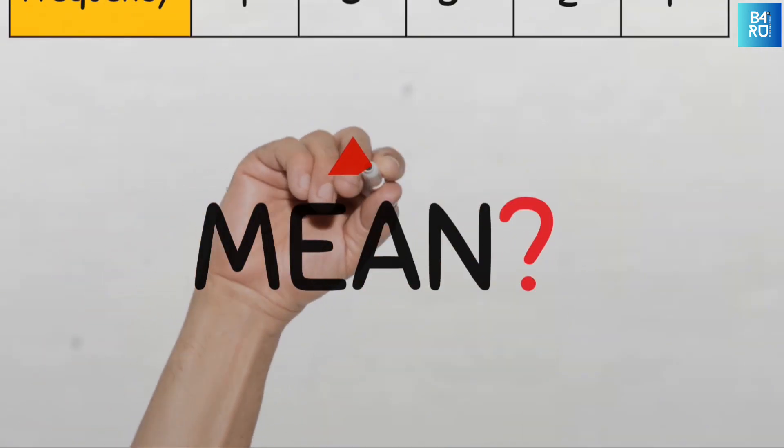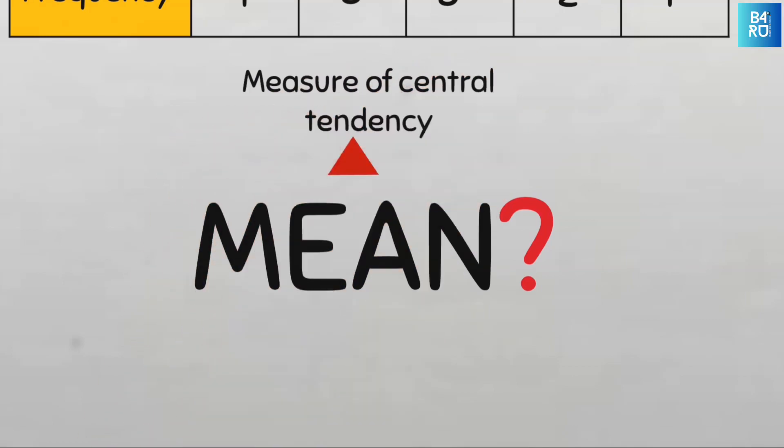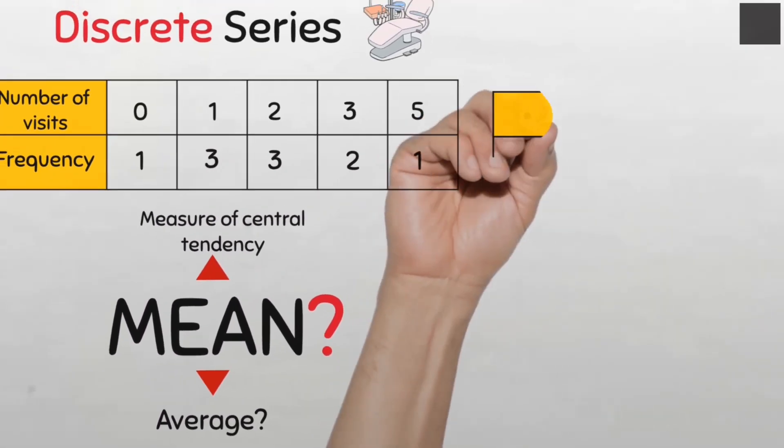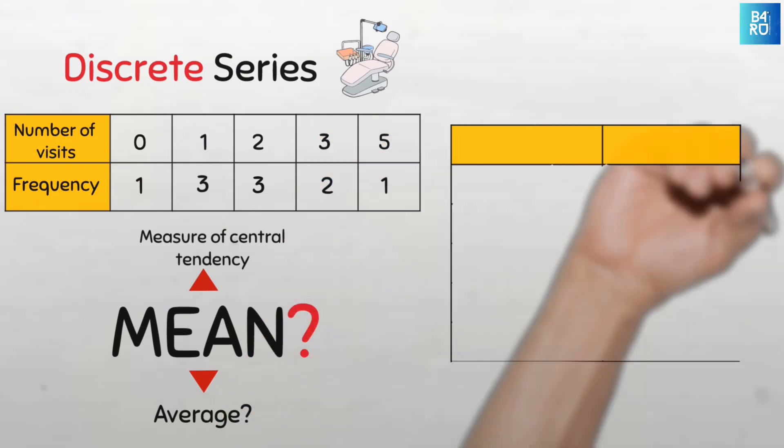Recall that the mean is a measure of central tendency that indicates the average of the dataset. So our task here is to find the average. Let's first modify the table a bit to make it easy for us to compute the mean.